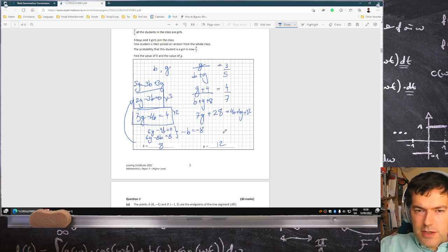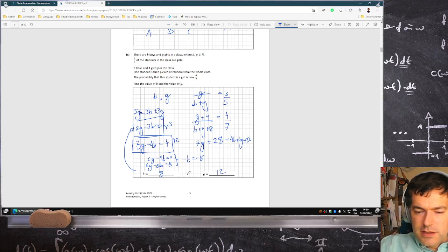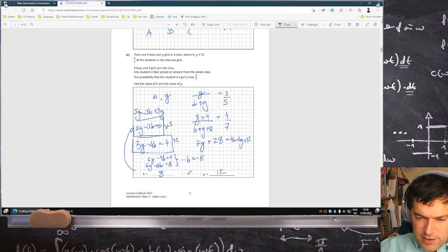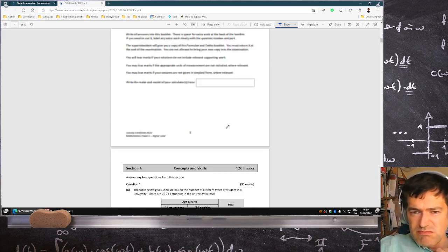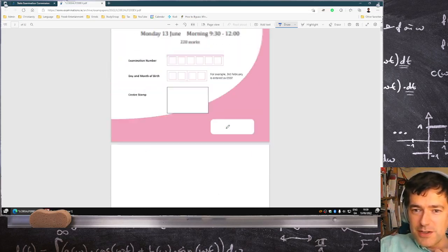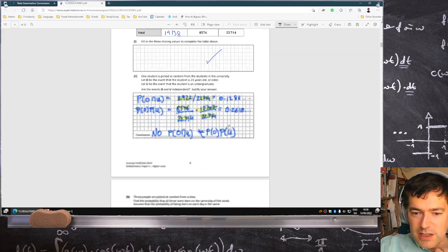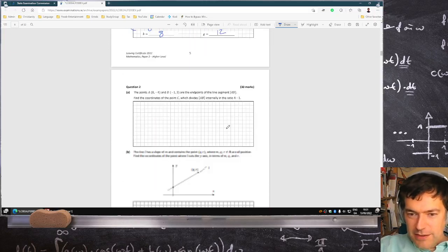We can check the answer. So at the beginning, are three-fifths of the students in the class girls? Well, there's 20 students and three-fifths of 20 is 12. That checks out. And then you add four of each, and now is it four-sevenths? So 16 over, now there's 28. Yeah, four-sevenths. Okay, so that's question one done. Hopefully I didn't make any mistake. You know, it takes a minute or two to ease into the exam. Any problems, just let me know in the comments, I'm sure you will. And let's get looking at number two now.